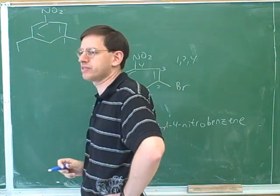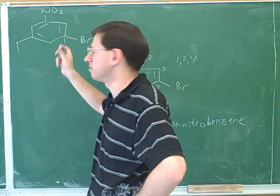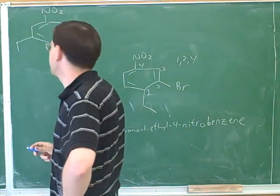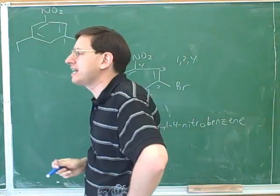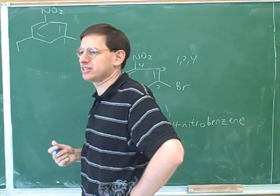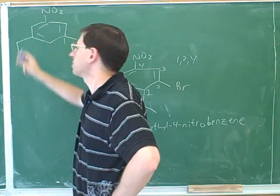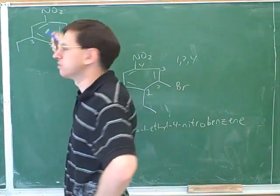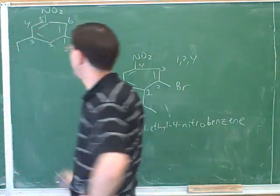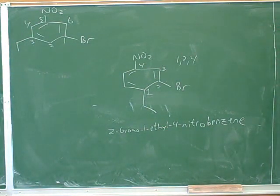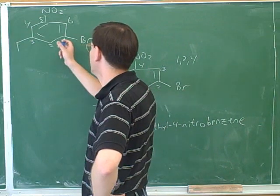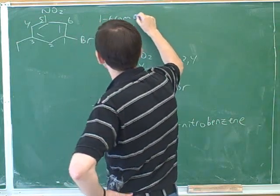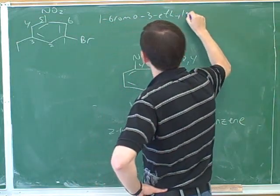No matter who we call number one here, we're going to get 1, 3, and 5. So as a last resort, we use alphabetization — bromine gets number one. We also need to decide whether to number clockwise or counterclockwise, and again either way gives 1, 3, and 5, so alphabetization decides that too. The full name is 1-bromo-3-ethyl-5-nitrobenzene. Because we used alphabetical order to determine the numbers, that happens to also put the substituents in alphabetical order.